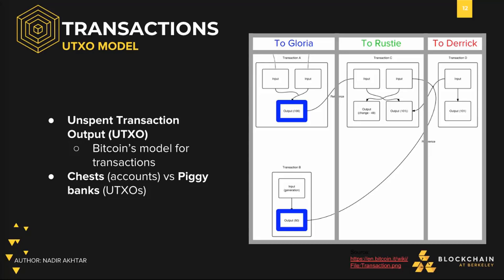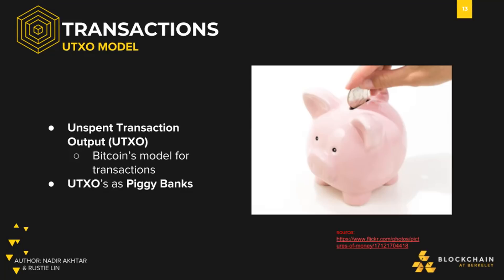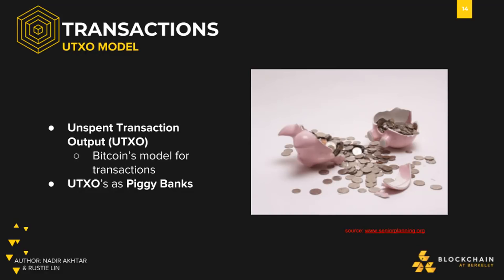To make transaction processing much easier and more secure, users do not spend from an account. Instead, they spend directly from transactions made to them. An easy way to wrap our heads around this unintuitive model is to think about UTXOs as piggy banks. Each time a transaction is made to us, we put all the money into a UTXO or piggy bank. When we want to spend money, we break open that piggy bank, spend whatever we like, and then put the rest into another piggy bank.